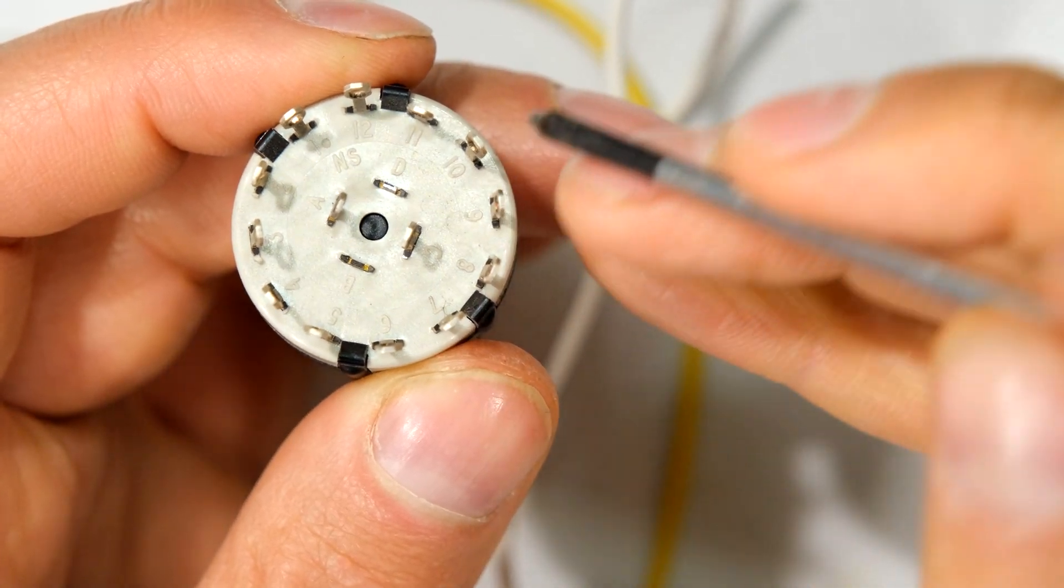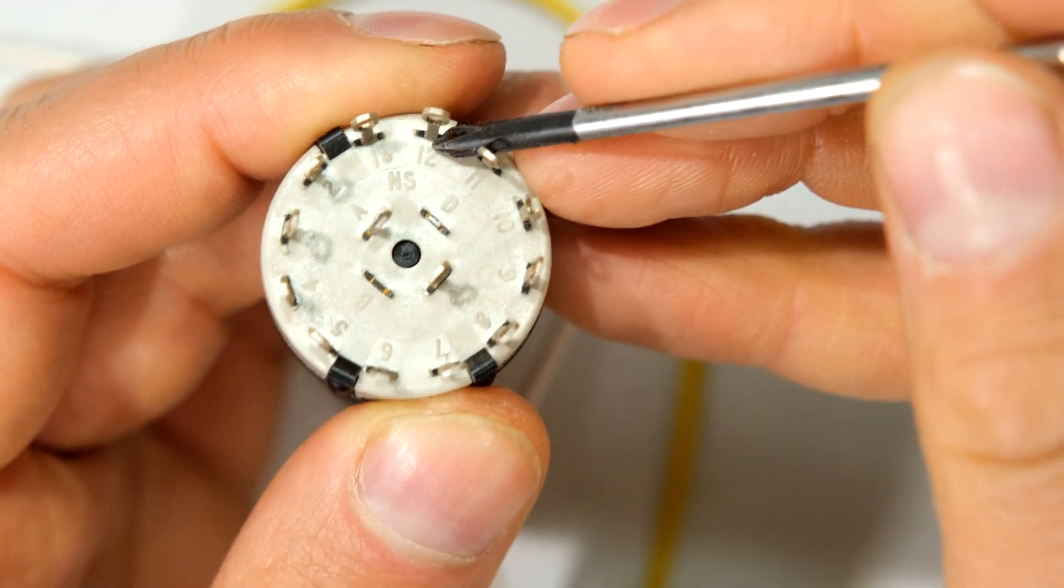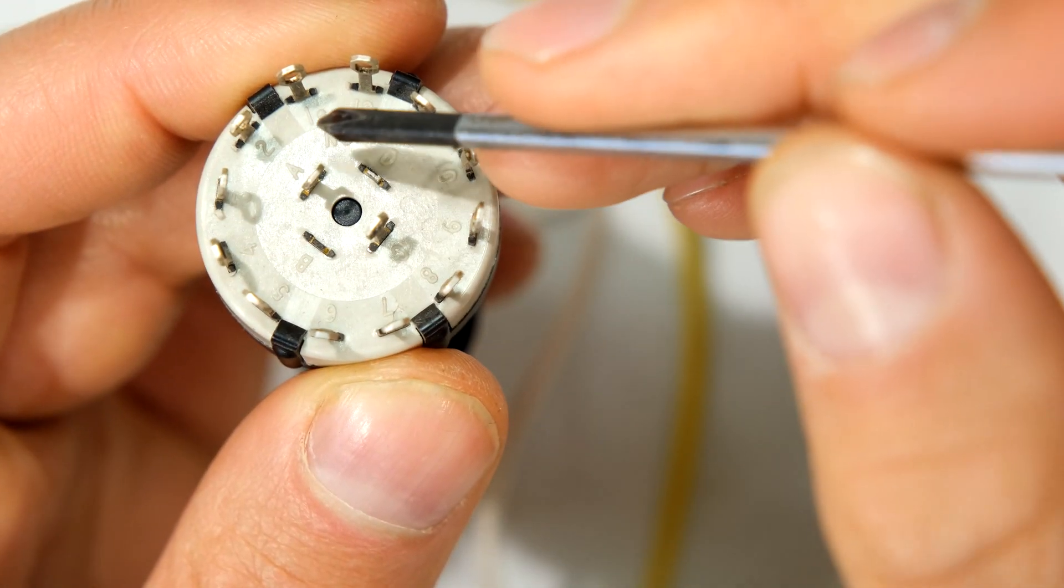At the back of this rotary switch you can see that the pins are numbered. For example, that one says 12, then it's 11, 10, 9, all the way around to one.